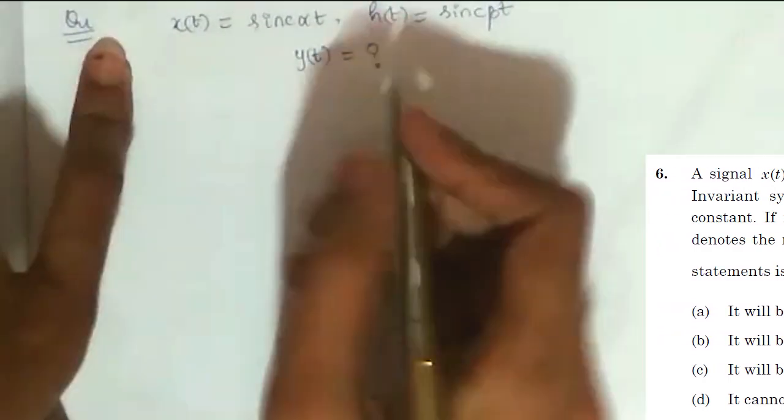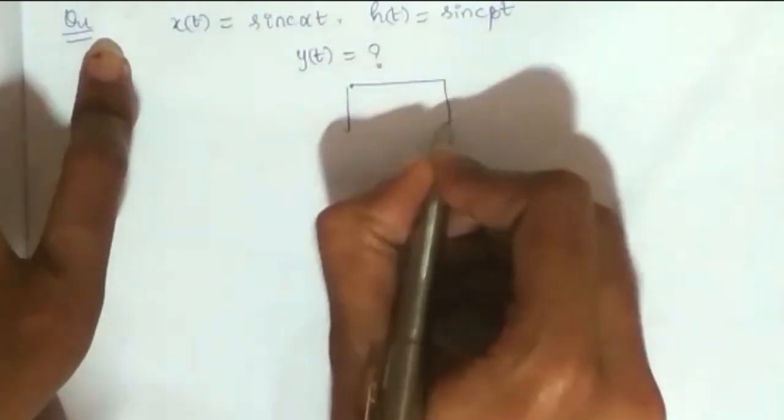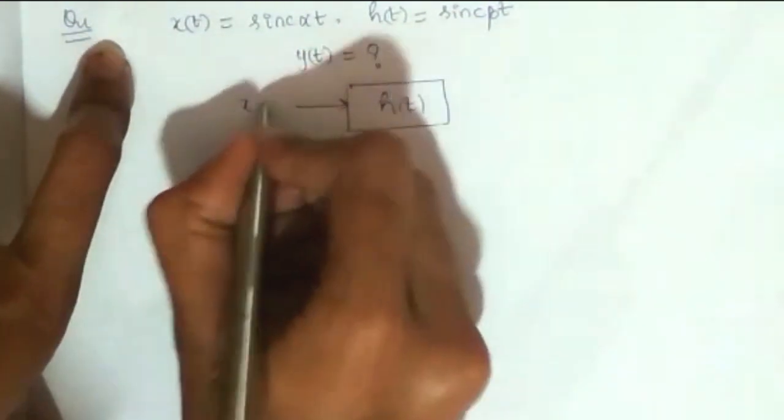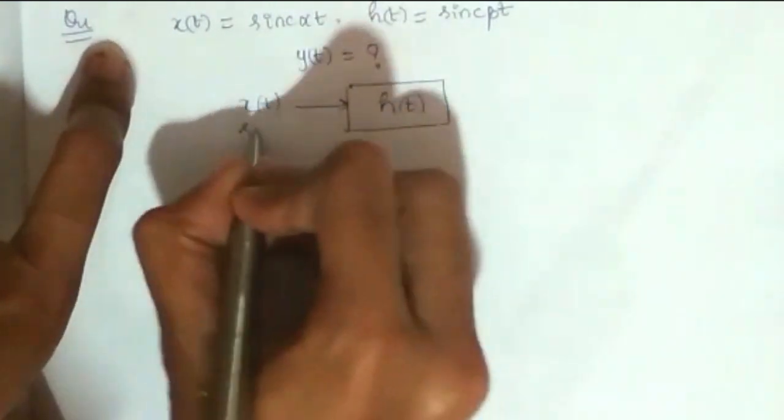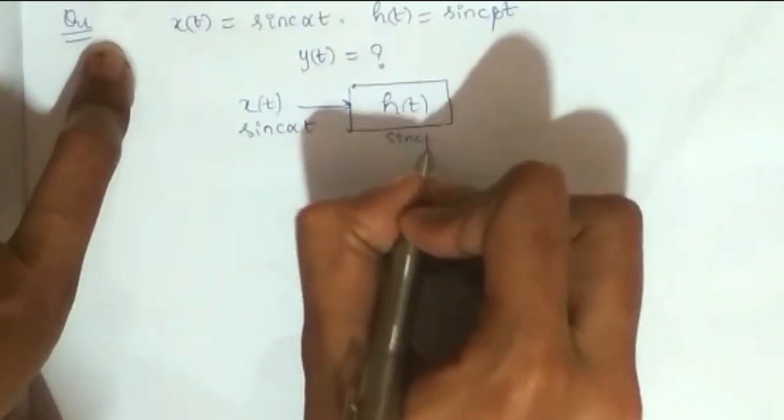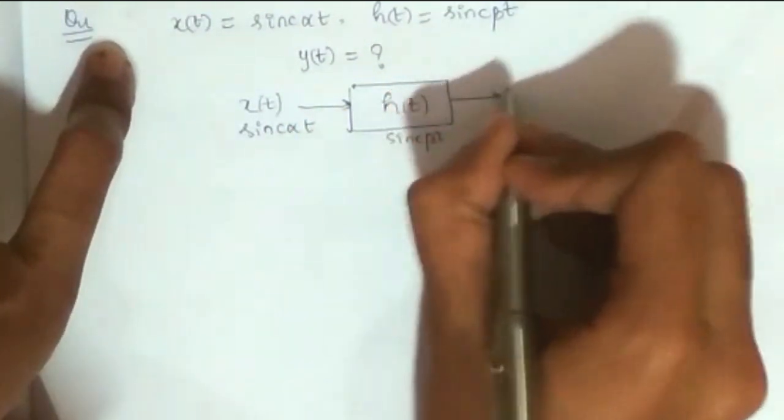So to get the response, this is my system h(t). Here input x(t) which is given as sinc(αt) and this is sinc(βt). We have to find this y(t).